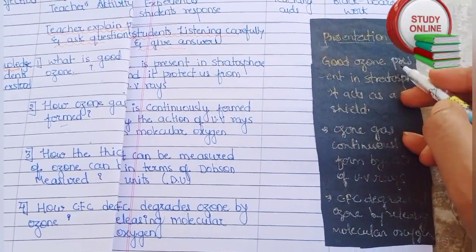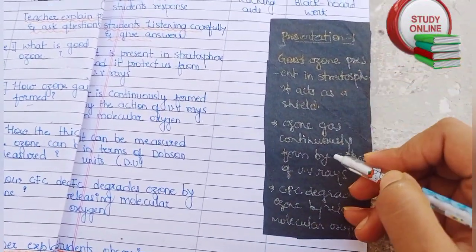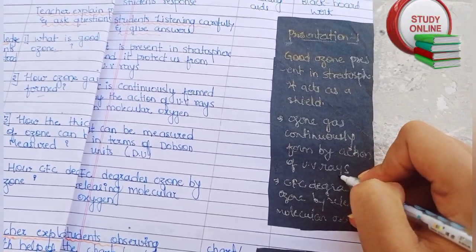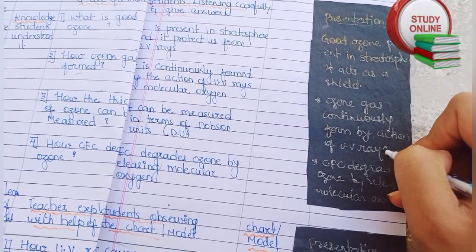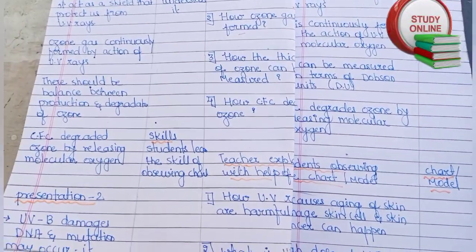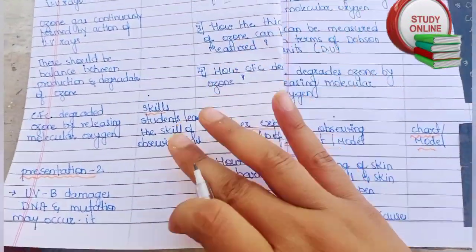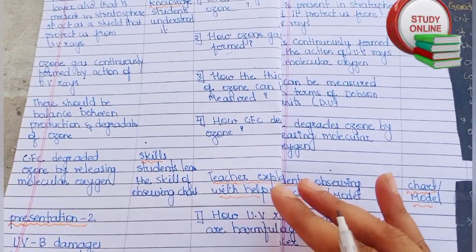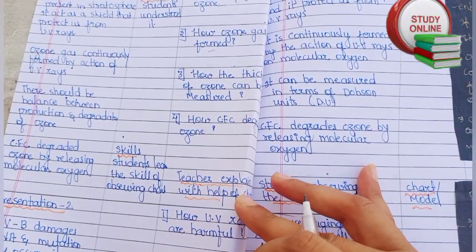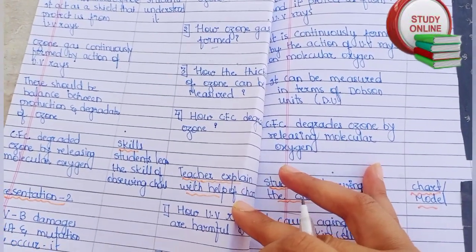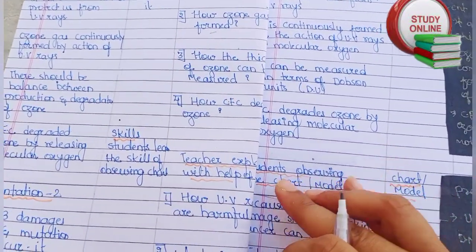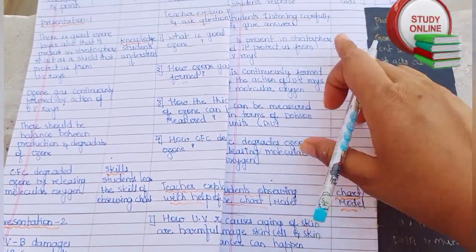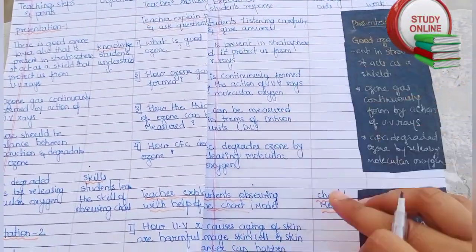Here you can see the blackboard work — this we have to write on the blackboard as well as mention in the lesson plan. After explaining properly, we also use a teaching aid. Here it says the teacher explains with the help of a chart or model, and students observe the chart or model. In the teaching aid column we write chart or model, whichever we are using.